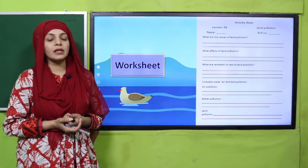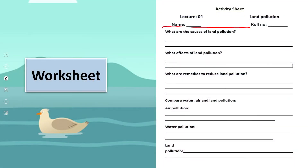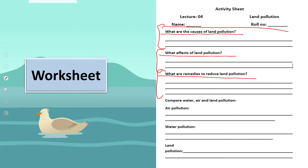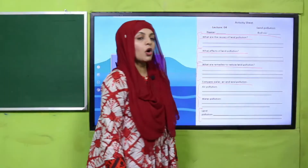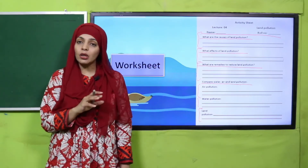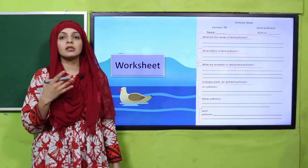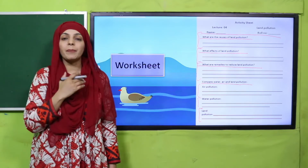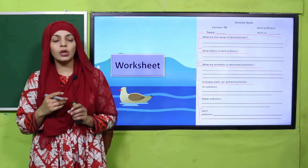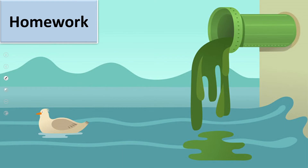Now is the time for practice. Download this worksheet from the description box below this video, get it printed, write down your name and roll number. Write down the causes of land pollution, then the effects, then the remedies to reduce it. Then compare air pollution, water pollution, and land pollution — since we have studied all three types, their causes, effects, impacts, and preventive measures, write down a few lines about all three.